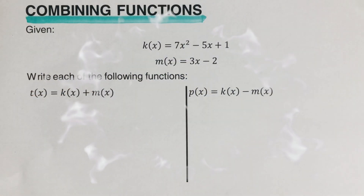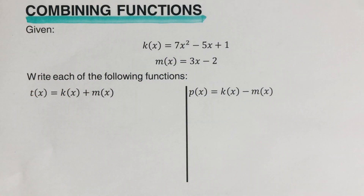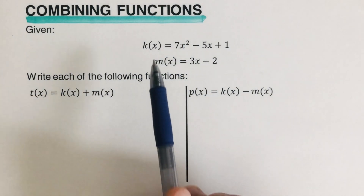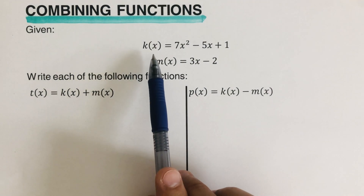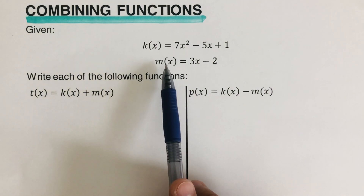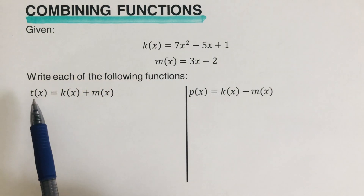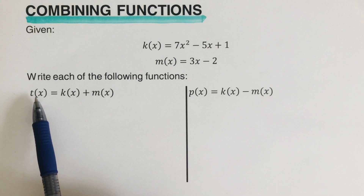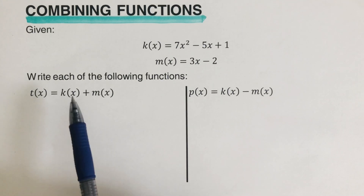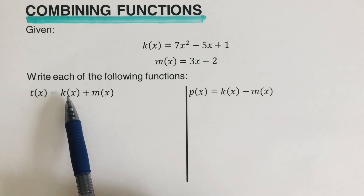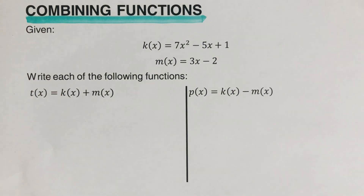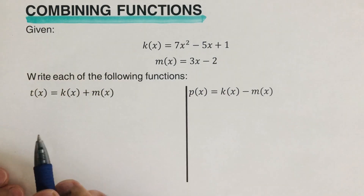Hello everyone, today we will be combining functions. We are given k of x and m of x. Our task is to determine — for the first one — t of x, where t of x is equal to k of x plus m of x. What we are going to do is write out what each function equals.